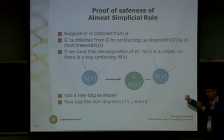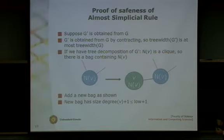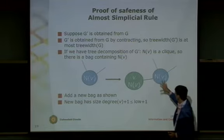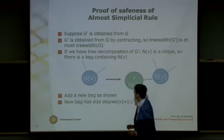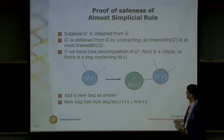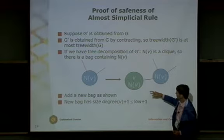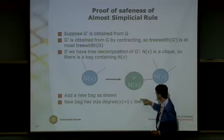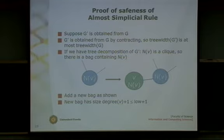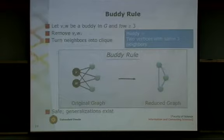For the safeness proof: one direction is that if you apply the operation the tree width cannot increase because you are essentially contracting an edge. The other direction: given a tree decomposition of the smaller graph, since the neighborhood of the vertex forms a clique after removing it, you can add this vertex and its neighbors as a new bag. Because the degree is at most the lower bound, the size of this bag is at most the tree width plus one, so you don't increase the tree width.